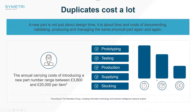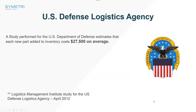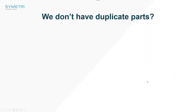The Aberdeen Group did a study where they found that the annual carrying cost of introducing a new part is anywhere between £3,800 and £20,000 per item. I did a little bit of searching for other studies, and in 2012 the U.S. Defense Logistics Agency said that the average cost for adding a new part to an inventory is $27,500 — closer to that upper number. So it costs a lot of money to create a new part effectively.